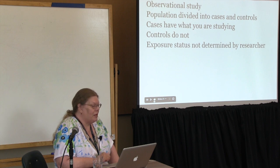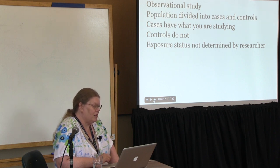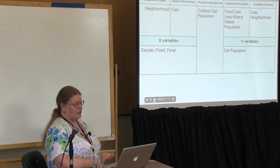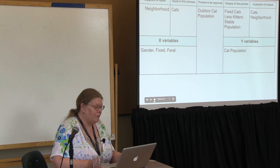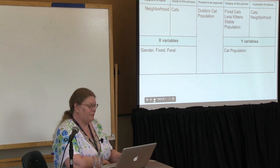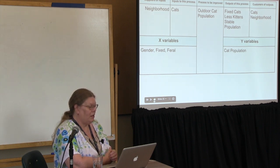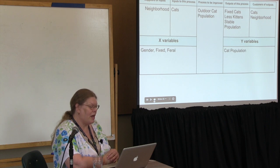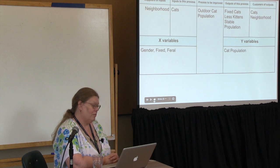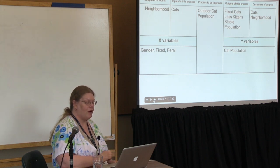Case control study — an observational study. The population is divided into cases and controls. Cases have what you are studying; controls do not. Exposure status is not determined by the researcher. In my outdoor study, I use SIPOC — a tool from Six Sigma where you put the process in the middle. My process is cat population, inputs are neighborhood cats, and outputs are fixed cats, fewer kittens, and stable population. The customers of the outputs are the cats and the neighbors. This gives me my X variables of gender, fixed, and feral, and my Y variable of cat population.